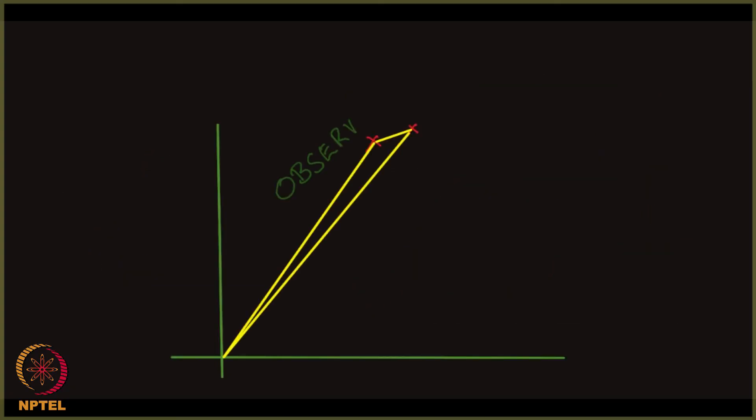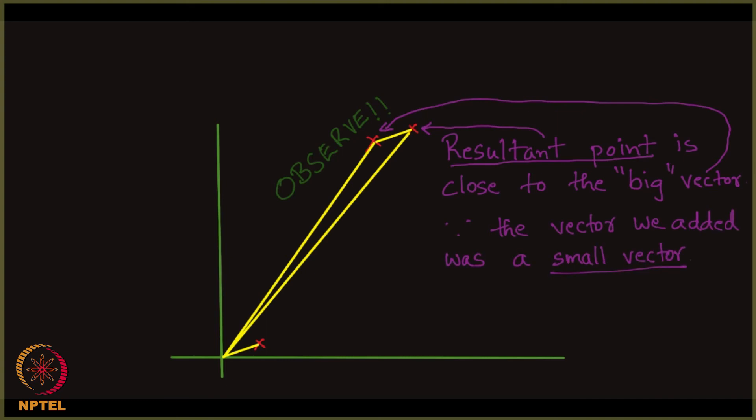Let us see what exactly this means. The resultant point is close when you add. The resultant point is close to the big vector. What do I mean by big vector? The vector that is big in amplitude. This is the big vector I am talking about. The resultant point which is this is close to the big vector. Because the vector we added was a small vector. Please note, if two vectors which are of the same amplitude when you add, this may not happen. This will happen only when you take a big vector and add it with a small vector.